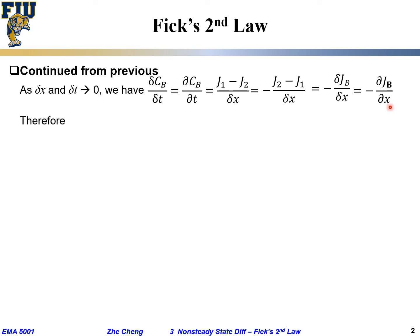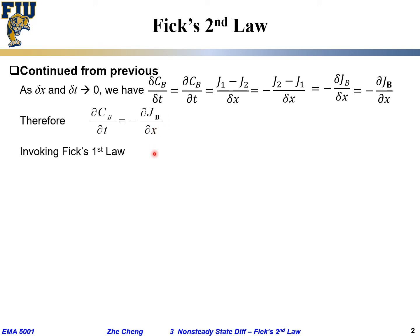So what we have is: the left side is the partial differential of concentration with respect to time; the right side is the negative partial differential of flux with respect to location. Don't forget the negative sign. Then we invoke Fick's First Law: it relates J with respect to the concentration gradient. J flux equals minus D, the diffusion coefficient, times the concentration gradient — how fast does concentration change with location.